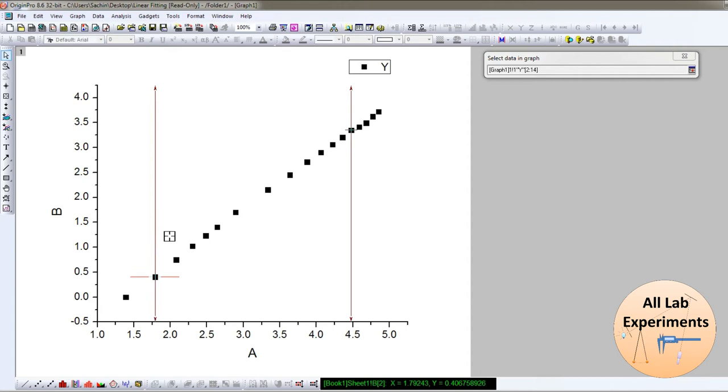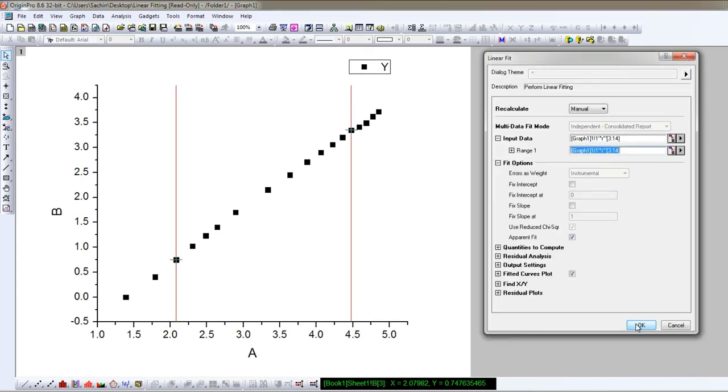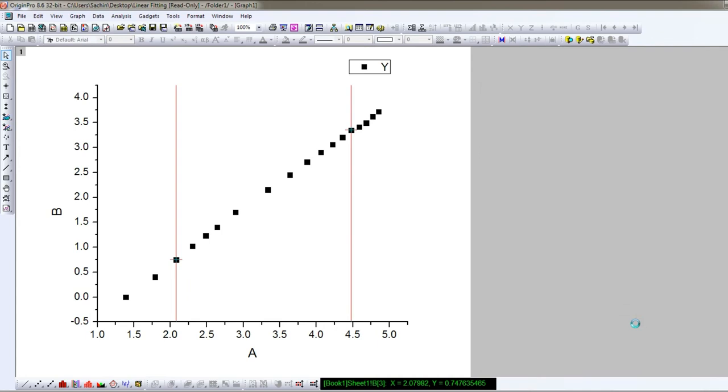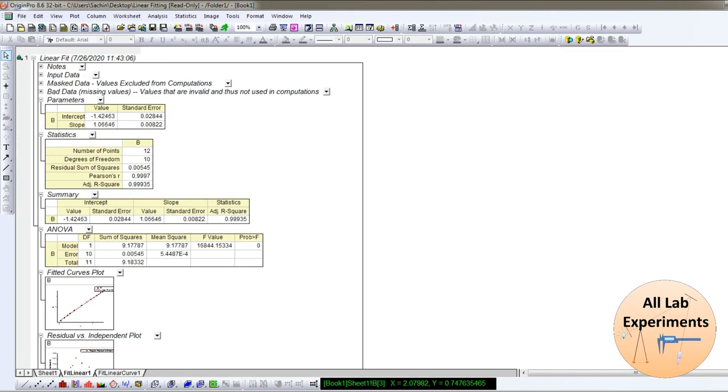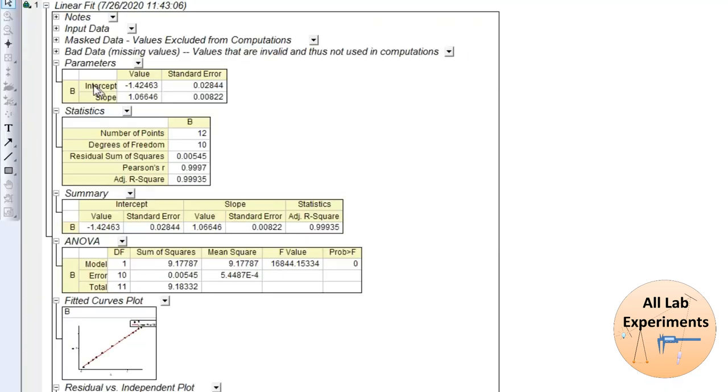linear fitting from this to this point. So after selecting this range and then you press OK. Nice. So now we have got our intercept value which is minus 1.42 in this case, and the points we selected, the...